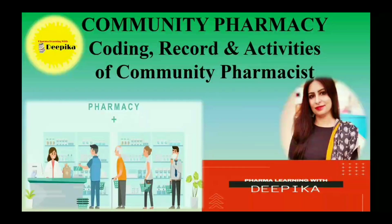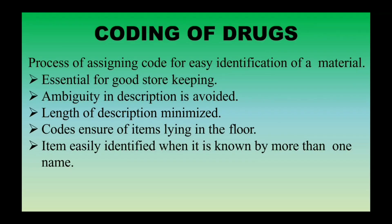Welcome back to my channel, Formal Learning with Deepika. Let's continue the chapter on community pharmacy, in which I will cover the coding and records of the drug. The link of my previous video on community pharmacy is in the description box. Let's start with the coding of the drug — coding basically means you provide a code by which you can easily identify a drug. Why is it necessary to provide a code?